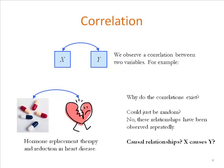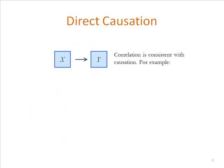Sometimes it could just be random. If you've got a study where you've measured two things and find them correlated, that could just be sampling variation — in another study you might not find the same result. But when you've measured things repeatedly and got replication, you know it's not random. The obvious thing is to say perhaps there's a causal relationship: perhaps X causes Y, and that's why we observe them varying together. Correlation is consistent with causation — it doesn't imply causation, but it's a hypothesis we could entertain.